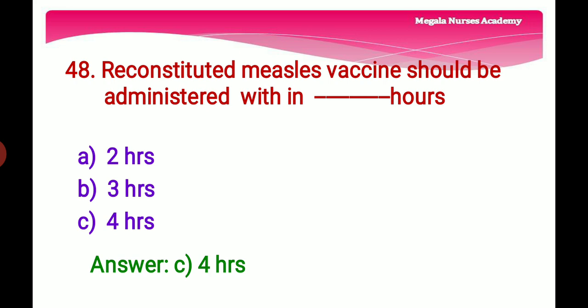Forty-eighth question: Reconstituted measles vaccine should be administered within — Option A: 2 hours, Option B: 3 hours, Option C: 4 hours. The right answer is Option C, 4 hours. After reconstitution, the measles vaccine should be kept at 2°C to 8°C, and any remaining reconstituted vaccine must be administered within 4 hours.